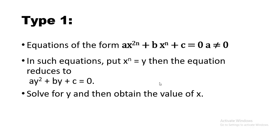Let's have a quick review of what we have learned. We are given an equation of the form AX²ᴺ + BXᴺ + C = 0, and we convert it into second order form by substituting XN with another variable Y, finding the substitution for X²ᴺ, then solving for Y first and back-substituting to obtain the value of X. That is how this type of equation is solved.